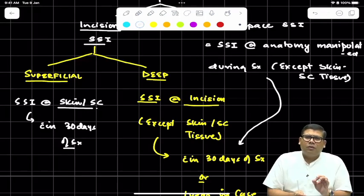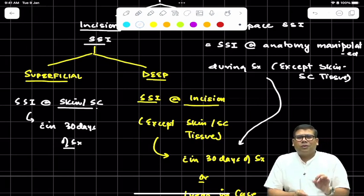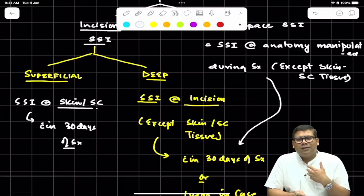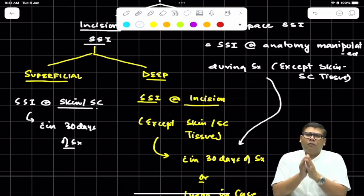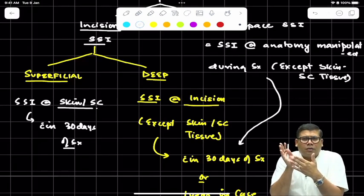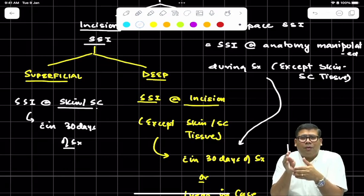Suppose there is a patient who has undergone TKR, total knee replacement, and after six months the patient is having myonecrosis above that area. Is that SSI? Yes, because in case of implants, the deeper incisions qualify for a phase of not 30 days, but up to one year.